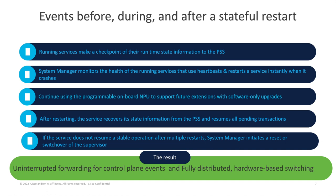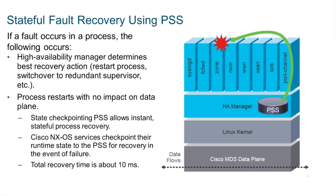In the event of failure, the system manager will restart the failed service on the same supervisor. The recovered service will use the data stored in the PSS to recover all the needed state tables and resume normal operation within about 10 milliseconds. Because NXOS uses hardware forwarding on the linecards, none of this process recovery will have any effect on the forwarding of traffic through the switch.